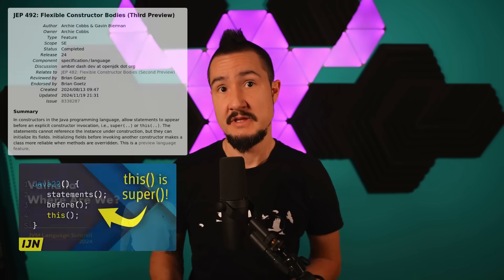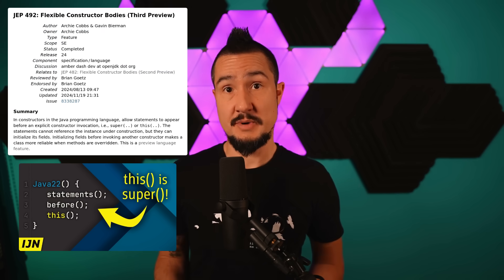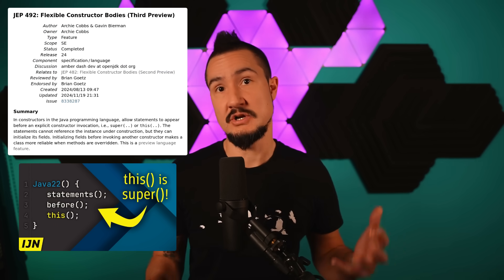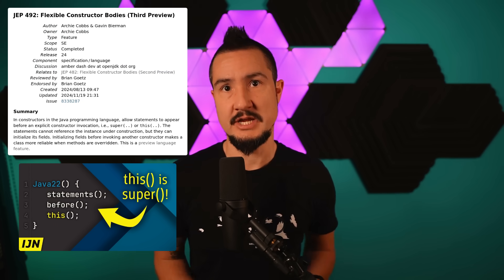Somewhat surprisingly, this feature also became important for Project Valhalla and its exploration of null-restricted types — but no time to dwell on that here. Brian's recent Valhalla update has more details. Flexible constructor bodies are in their third preview and unchanged over the last one in JDK 23.